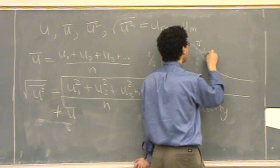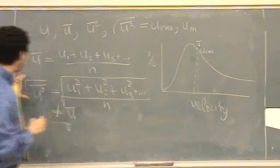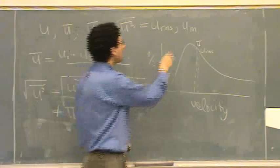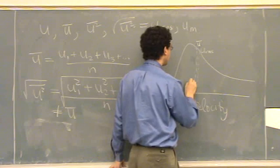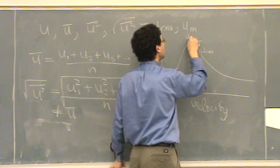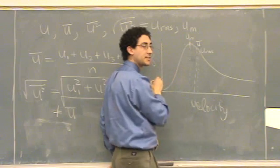would be your root mean square velocity, which is this. Your mode velocity is the one that has the most. That's that one right there. Whatever there's the most of, that's the mode.